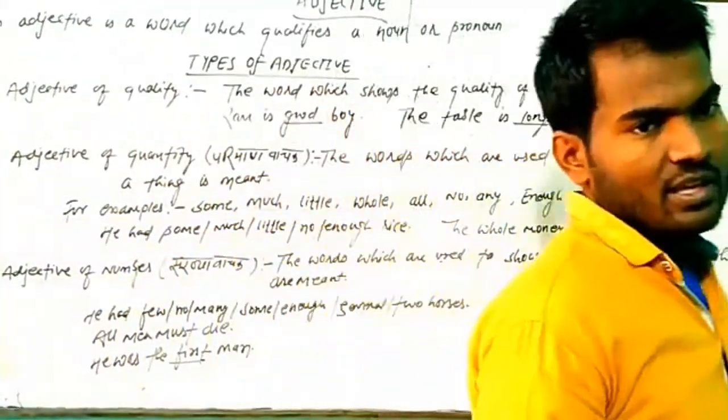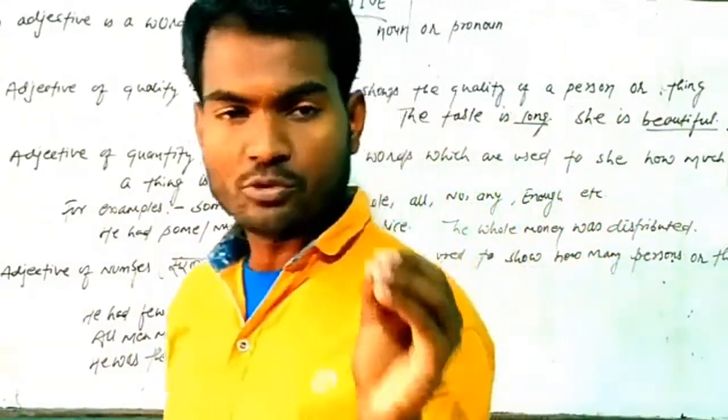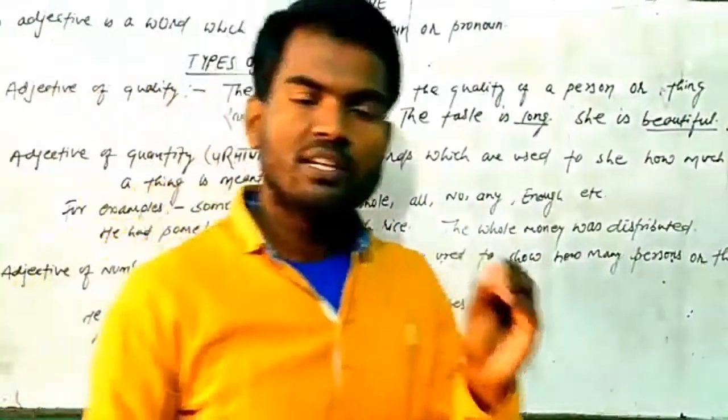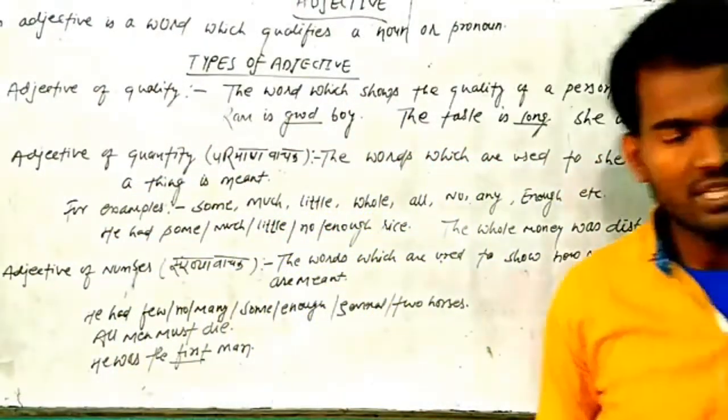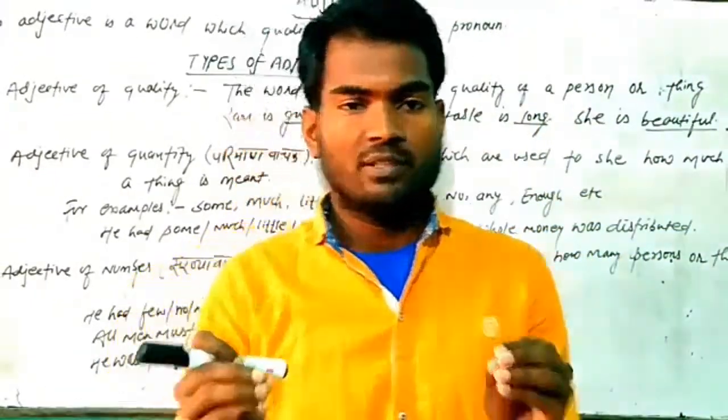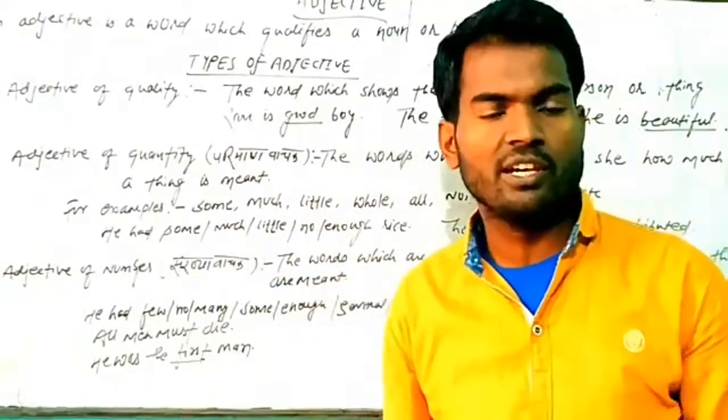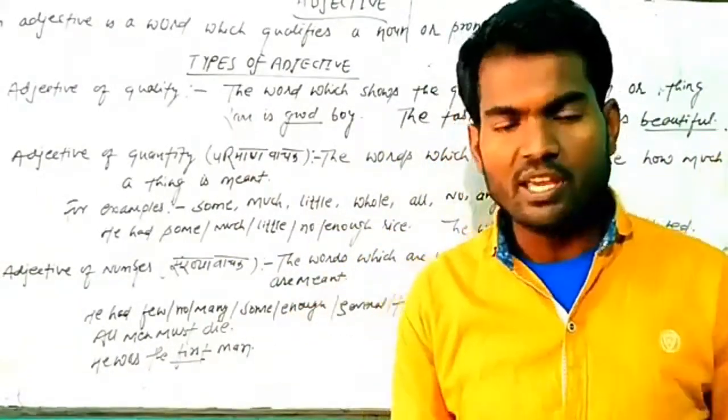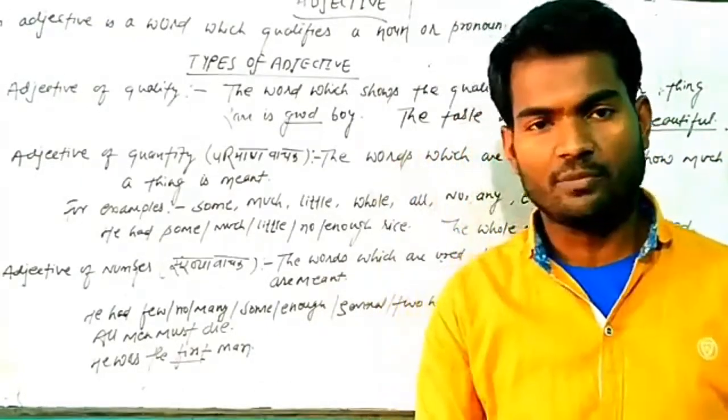Bishishan kya hai? Bishishan us sab ko kehatay hai jho sangya tata saranaam ki bishishan ta ko batlata hai. Just like Ram eek acha sishak hai. So Ram is a sangya hai, and acha jo hai, wo ek adjective hai, wo eik bishishan hai.